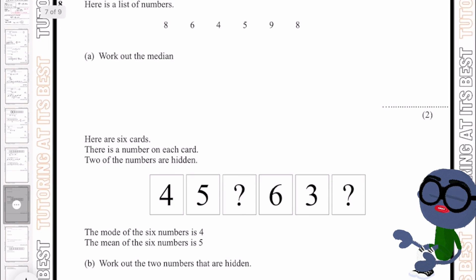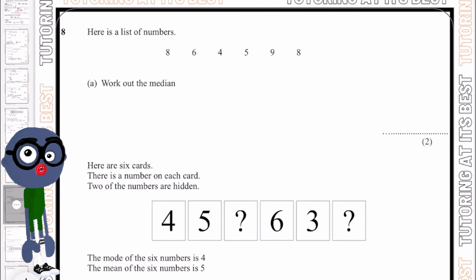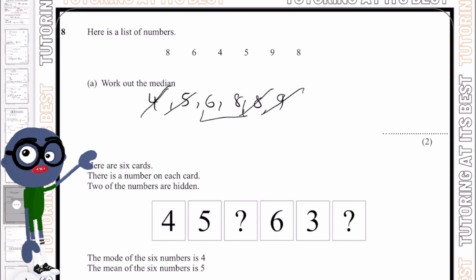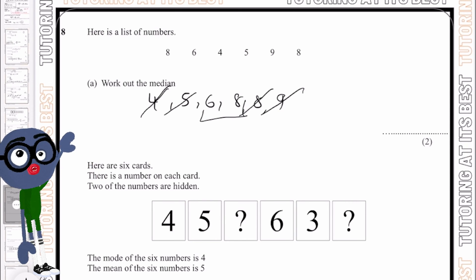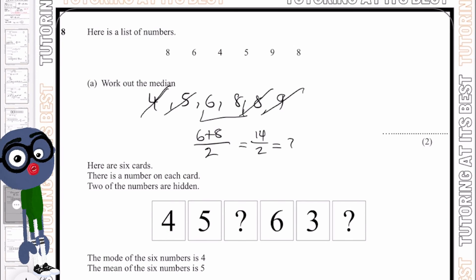Question eight, part a: find the median. Ordering the numbers and crossing out from each end, we're left with 6 and 8. Adding them and dividing by 2 gives us 14 divided by 2, which is 7.